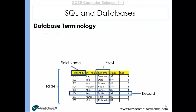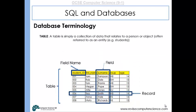In terms of understanding the database table, we need to understand some key terminology. A table is a collection of data that relates to a person or an object, and it's often referred to as an entity. So you could have a table about a set of students — students would be the entity.